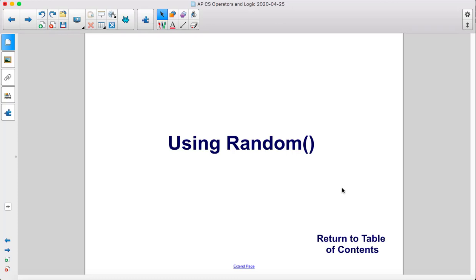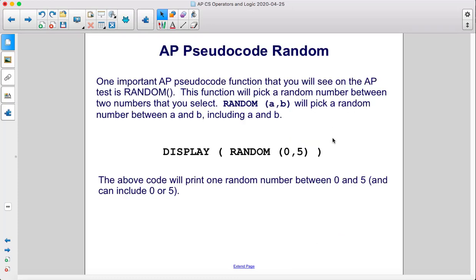Using Random. One important AP pseudocode function that you will see on the AP test is random. This function will pick a random number between two numbers that you select.